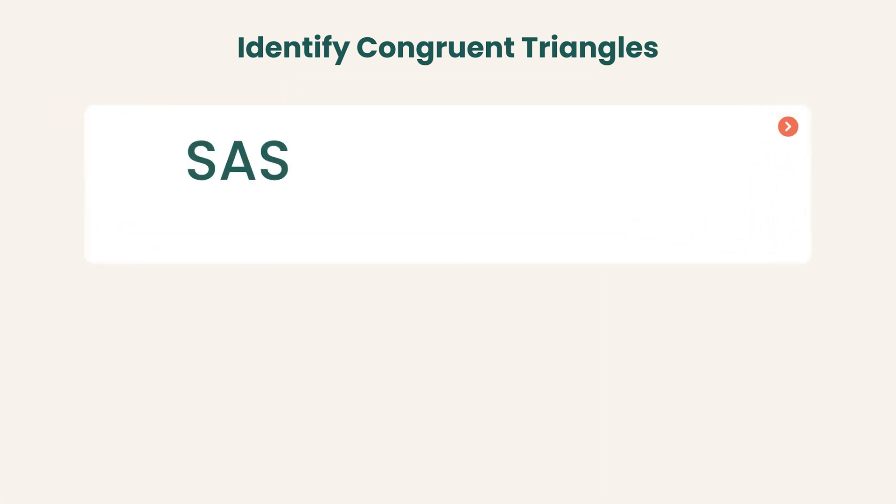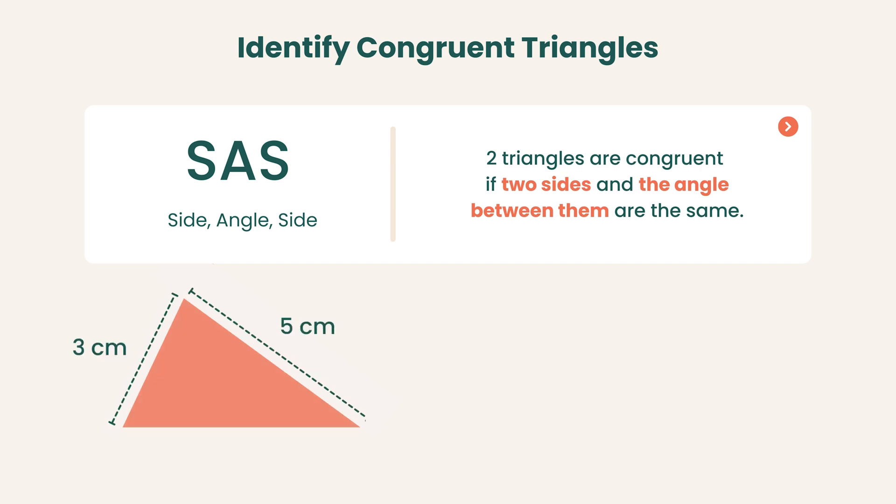Second, SAS, side-angle-side. Two triangles are congruent if two sides and the angle between them are the same. Here too, there is only one way to construct a triangle with this information.